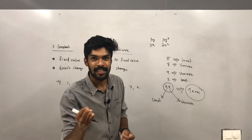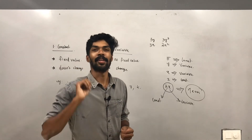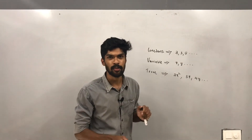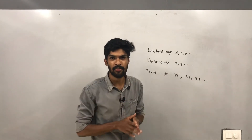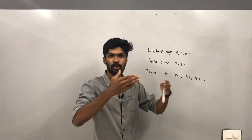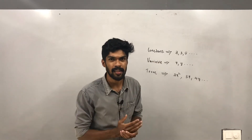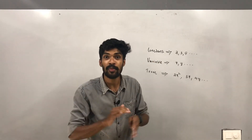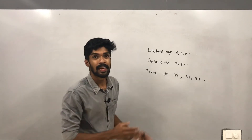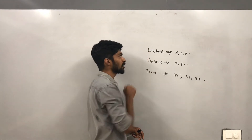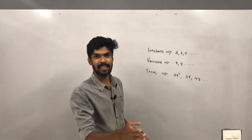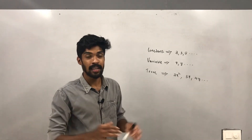So to recap: a constant has a fixed value that does not change; a variable has no fixed value and it changes; a term is a combination of a constant and a variable. Examples of terms are 2x², 3x, 4y, and xy.